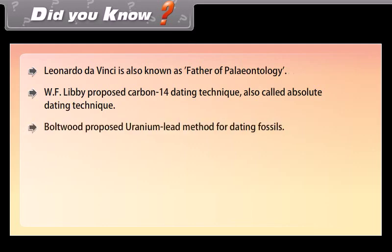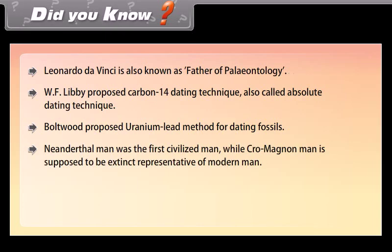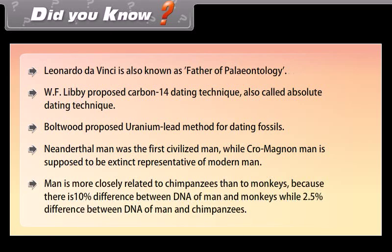Boltwood proposed the uranium-lead method for dating fossils. Neanderthal man was the first civilized man, while Cro-Magnon man is supposed to be an extinct representative of modern man. Man is more closely related to chimpanzees than to monkeys, because there is a 10% difference between the DNA of man and monkeys, while only a 2.5% difference between the DNA of man and chimpanzees.